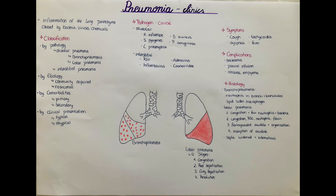Legionella pneumophila is one of the leading pathogens causing pneumonia. It is considered a facultative parasite and is the leading cause of Legionnaires' disease, discovered in the 1970s in Philadelphia when several veterans got an atypical pneumonia after a conference where the air conditioner was contaminated. Legionella antigens can be detected in the urine or by a positive fluorescent antibody test on sputum, though culturing the sputum or blood is gold standard.